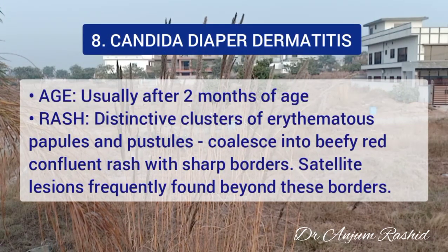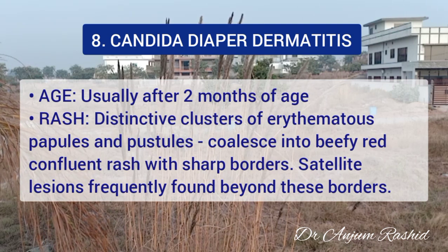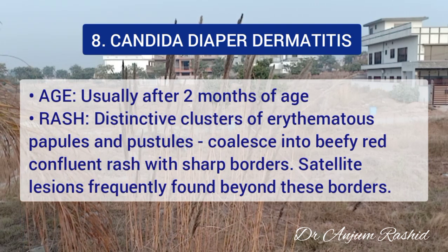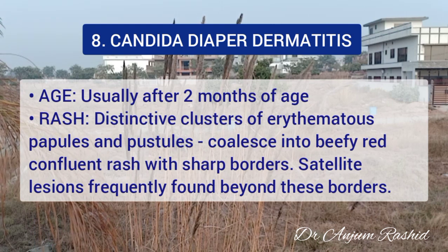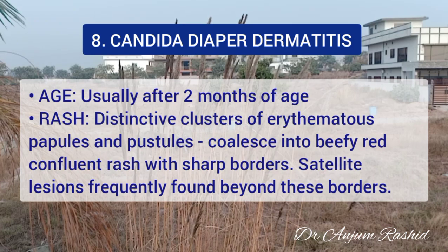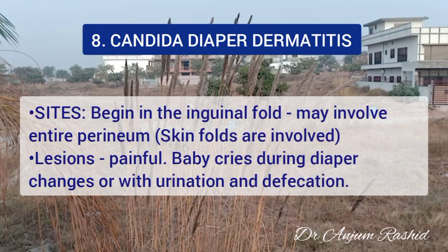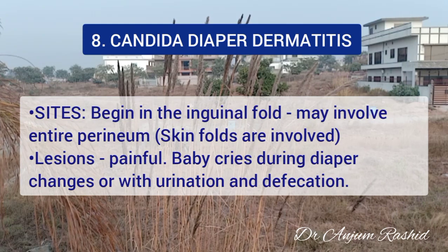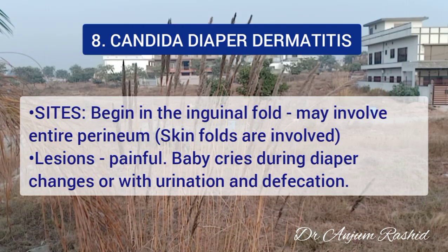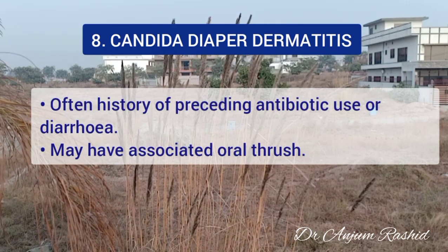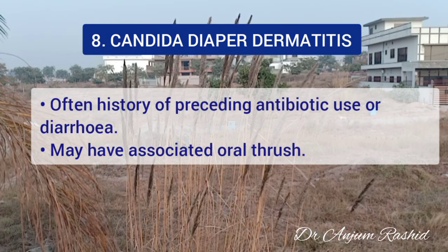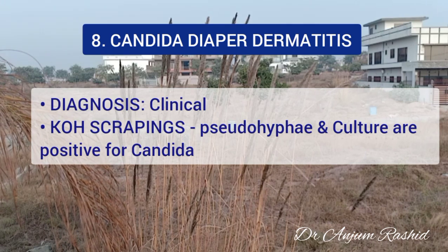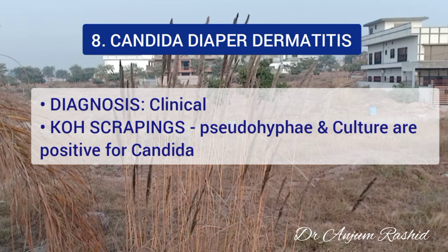The eighth differential is candida diaper dermatitis. It usually affects infants more than 2 months of age and consists of distinctive clusters of erythematous papules and pustules which later coalesce into a beefy red confluent rash with sharp borders, with satellite lesions beyond these borders. It begins in the inguinal fold but may involve the entire perineum, and typically the skin folds are involved. The lesions are painful and the baby cries during diaper changes or with urination and defecation. There is often a history of preceding antibiotic use or diarrhea, and there may be associated oral thrush. Potassium hydroxide scraping shows pseudohyphae and cultures are positive for Candida.